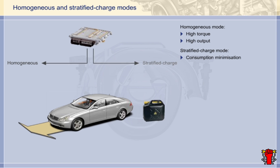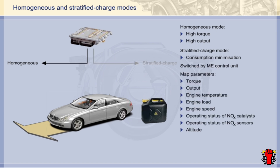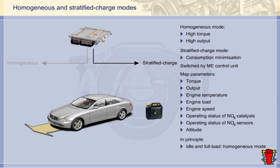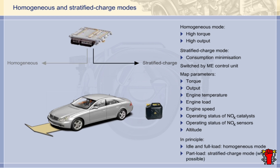By contrast, in stratified charge mode the priority is to minimize fuel consumption. The engine control unit switches between these two operating modes according to requirements without impairing driving performance. The switching is map-controlled using a number of parameters, including engine load, engine speed, and the operating status of the nitrogen oxide catalysts. In general, the engine runs in homogenous mode when idling and at full load, while in the part-load range it operates primarily in stratified charge mode to reduce fuel consumption.